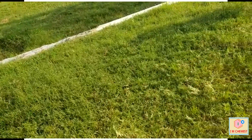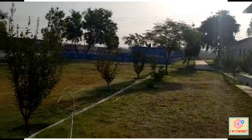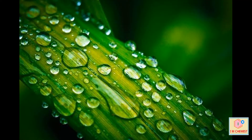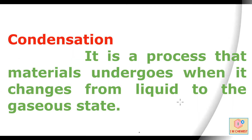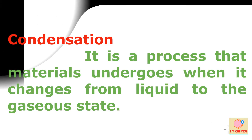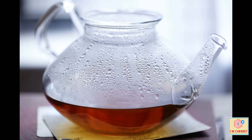Dew is a natural form of water, formed as water vapor condenses. Dew is the moisture that forms as a result of condensation. Condensation is the process a material undergoes as it changes from a gas to a liquid state. Dew is the result of water changing from a vapor to a liquid.